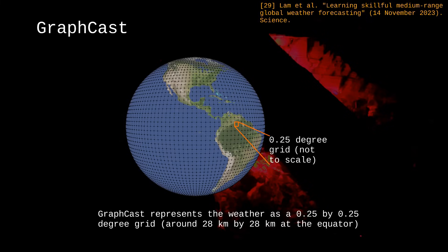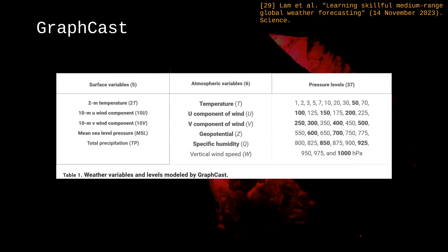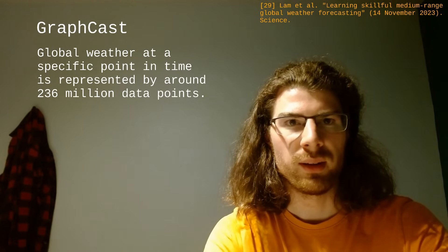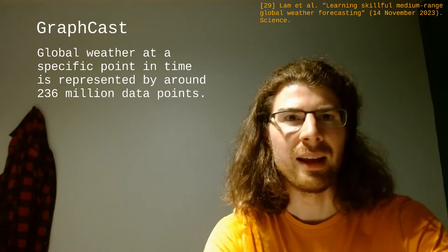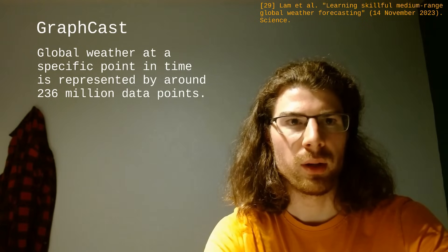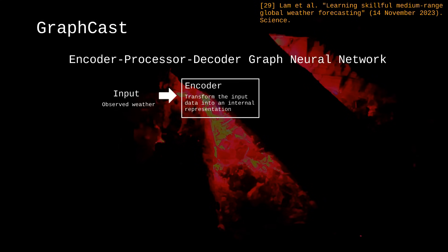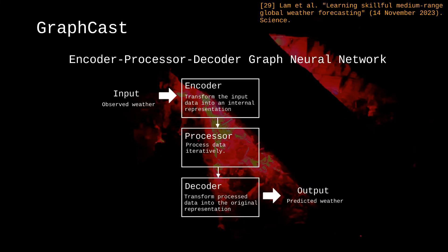GraphCast represents the weather as a 0.25 latitude-longitude grid that gives around 1 million points for the entire planet. Each point corresponds to multiple variables, like temperature or pressure, so we obtain around 236 million values in total. That represents global weather at a specific point in time. This representation is fed to a graph neural network arranged in an encoder-processor-decoder configuration. This means that the model first maps the input to an internal representation that gets processed iteratively and then decoded by the final layer back into the original format.